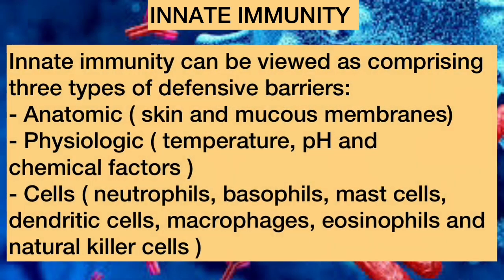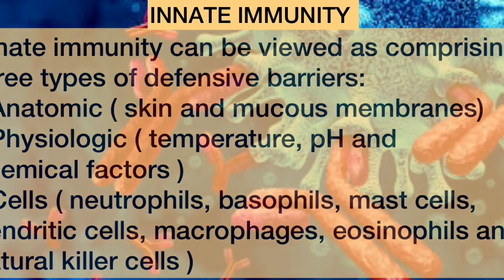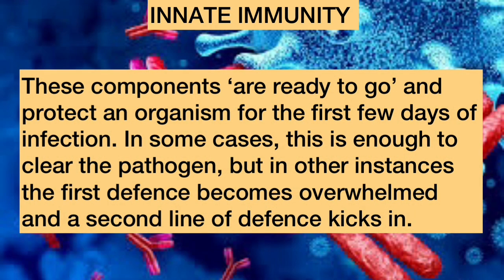Innate immunity can be viewed as comprising three types of defensive barriers. Firstly, the anatomic barrier — these are the skin and mucous membranes. Secondly, the physiologic barrier, which includes temperature, pH and the chemical factors of the human system. Thirdly, the cellular components, which are neutrophils, basophils, mast cells, dendritic cells, macrophages, eosinophils and natural killer cells. These components are ready to go and protect an organism for the first few days of infection.